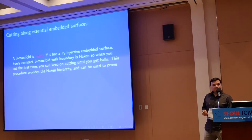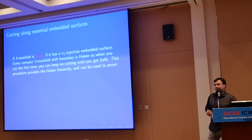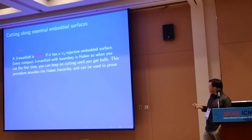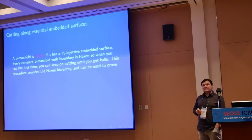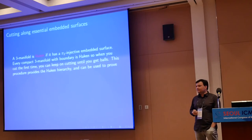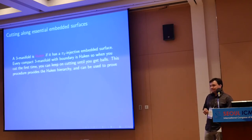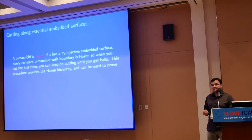In order to understand what the Surface Subgroup Theorem is, let's start talking about low-dimensional topology. The main object of the subject is to understand the nature of low-dimensional manifolds, where low means dimensions two or three. Two-dimensional surfaces have been classified a long time ago, and it took basically more than 100 years to achieve the understanding of the classification of three-manifolds that we have today. That has been a very long and, in the end, very fruitful journey.